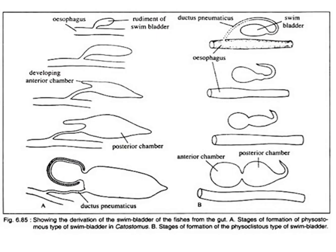The diagram shows the swim bladder in these two conditions. The left side shows the physostomous condition, where a connection is retained via the ductus pneumaticus between the swim bladder and the alimentary canal. The right side shows the physoclistous condition, where this connection is lost; the gas gland introduces gas into the swim bladder, and there is no connection between the swim bladder and the alimentary canal.